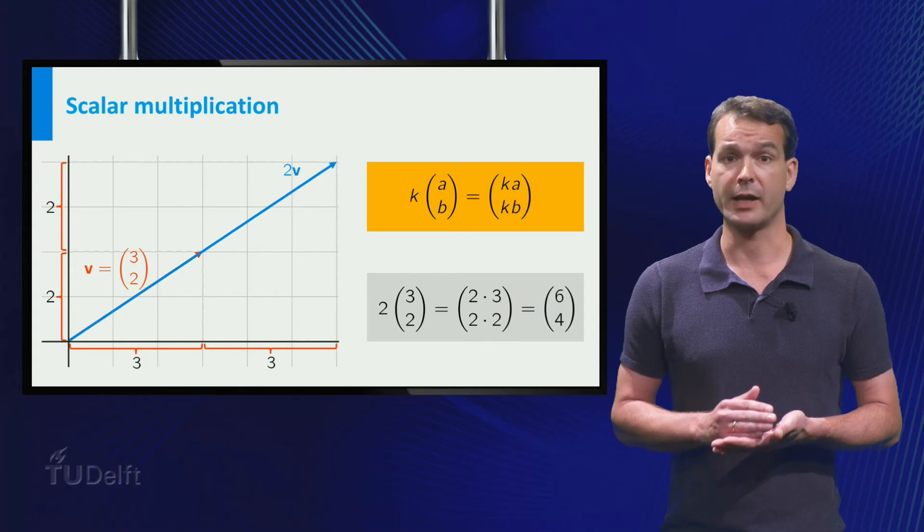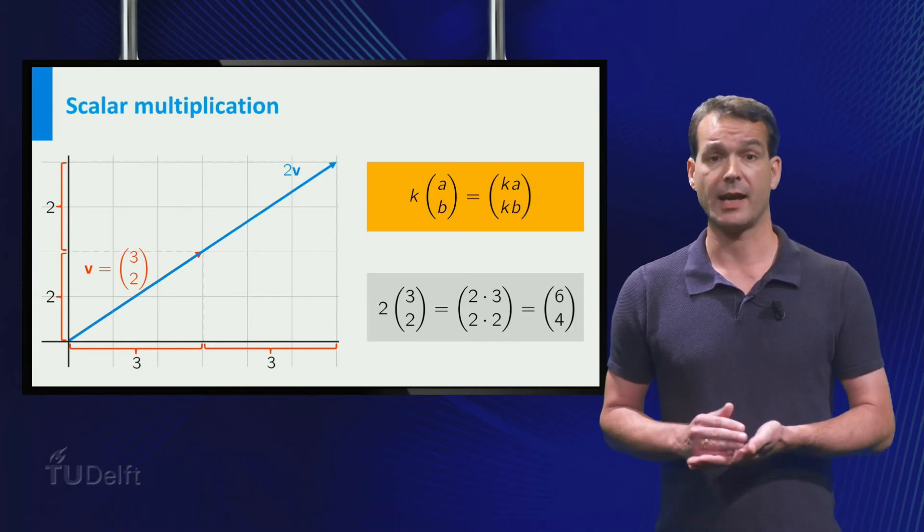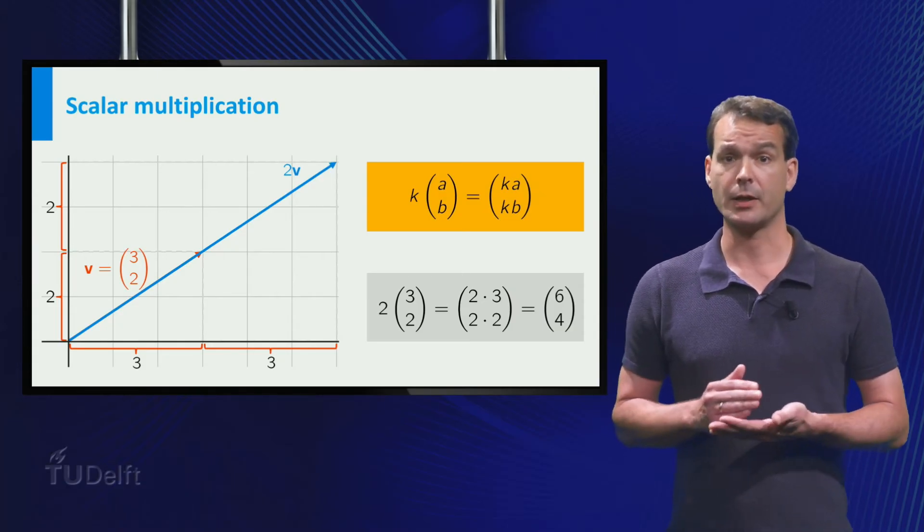In general, if you multiply the vector by the scalar k, you get the vector.